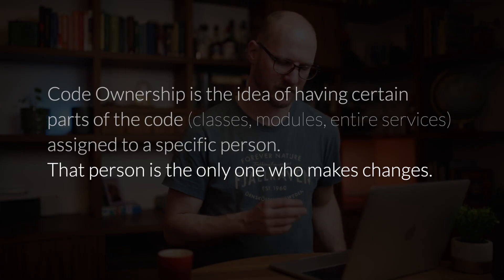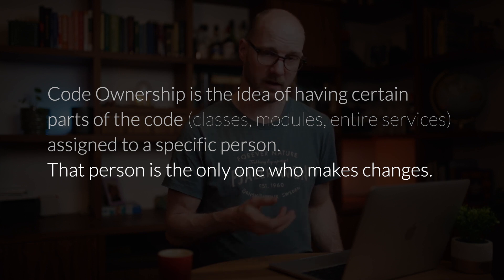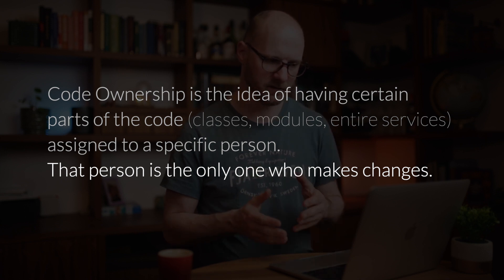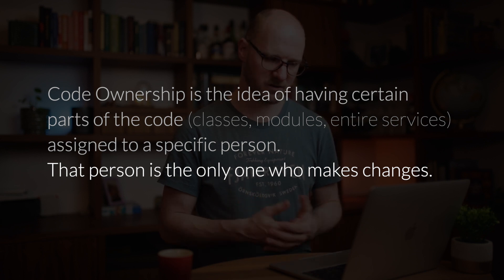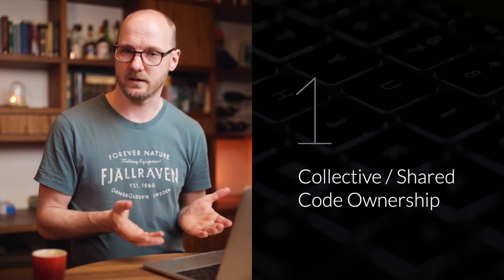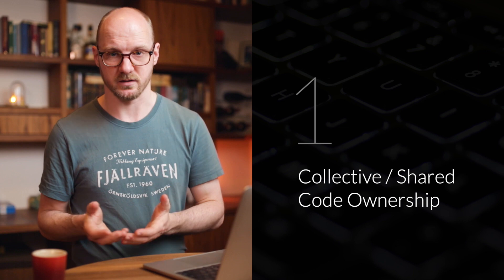Code ownership is the idea of having certain parts of the code — like classes, modules, or entire services — assigned to a specific person. That person is the only one who makes changes. The opposite is called collective code ownership or shared code.